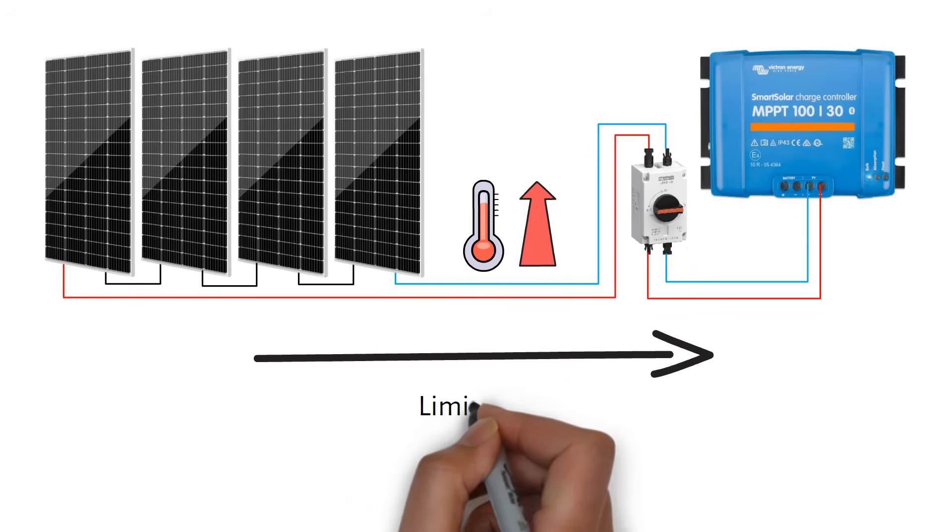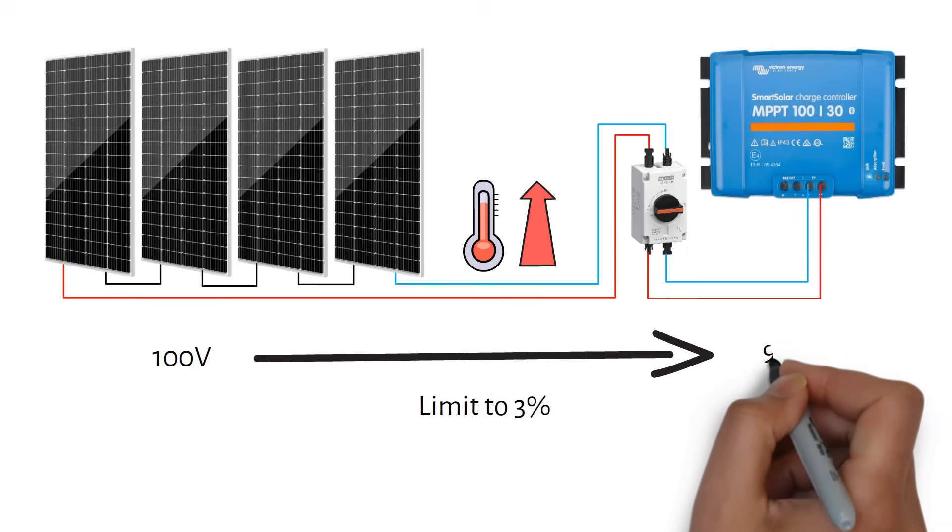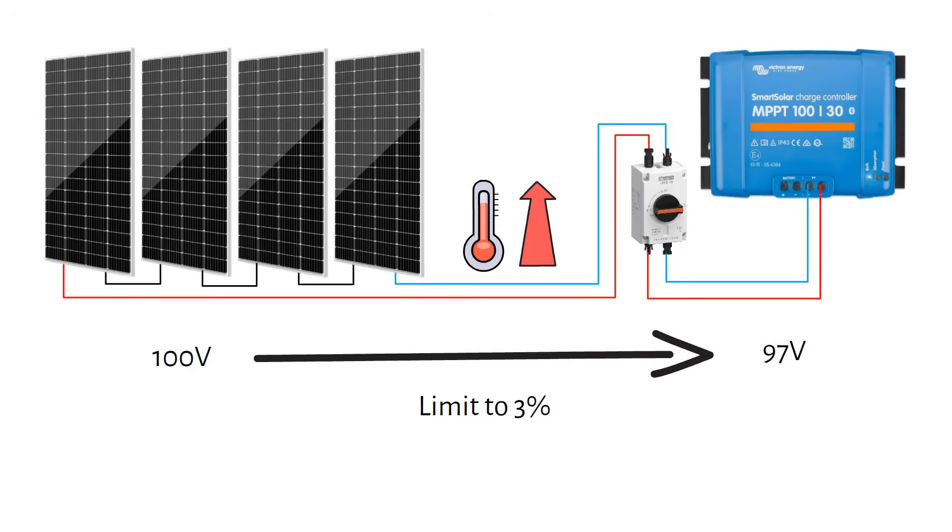We limit the voltage drop to 3%. For example, if your string of panels is 100 volts, 3% means you can lose about 3 volts along the cable, leaving you with 97 volts at the end. If the current is 10 amps and the loss is 3 volts, then we have a total power loss of 30 watts.